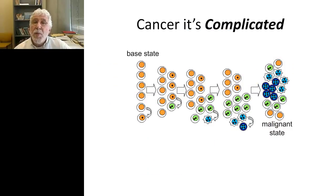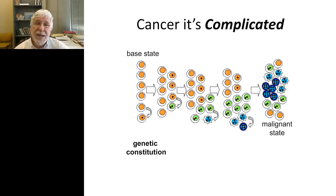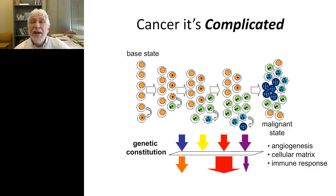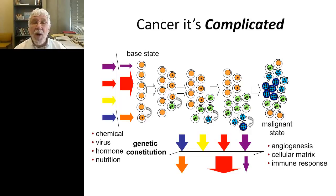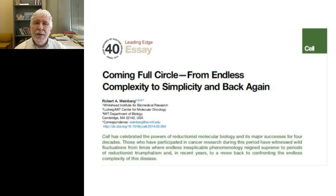We also know that what's happening at the somatic level is only one dimension — cancers occur within hosts. Hosts themselves have millions of genetic variations. The DNA I inherited from my mom is different in a million different locations from the DNA I inherited from my dad. Those constitutional differences influence basic cellular processes ranging from angiogenesis to the cellular matrix to how the immune system can respond, and also influence how the host sees the external world, modifying the impact of chemical exposures, viruses, and nutrition on the development of cancer. Suffice it to say, while precision medicine may be targeting an entity, cancer is complicated — very complicated.